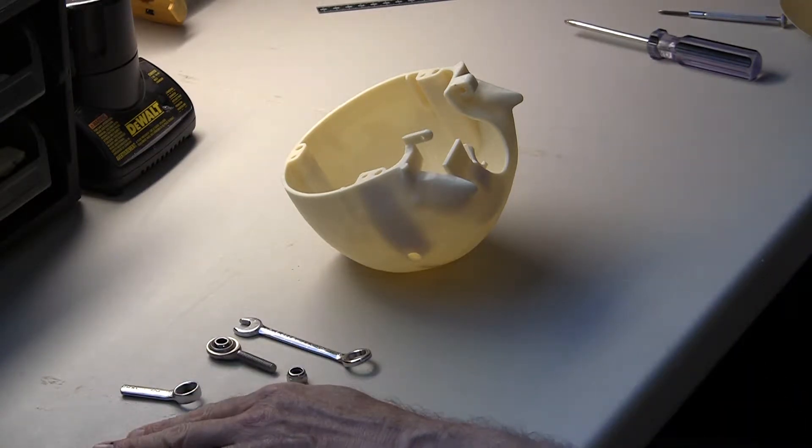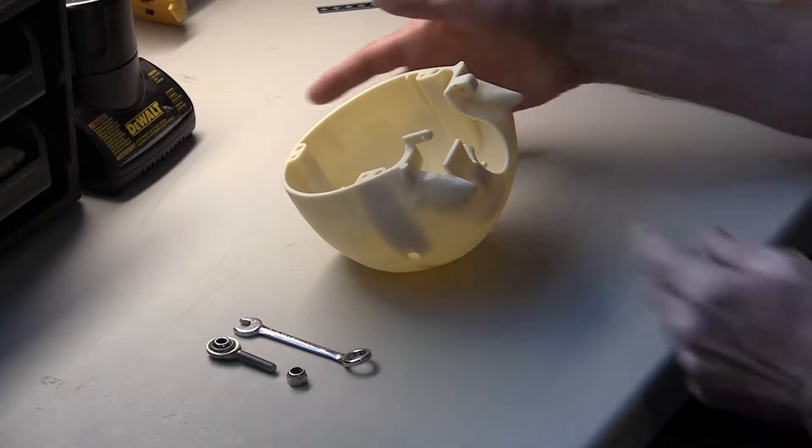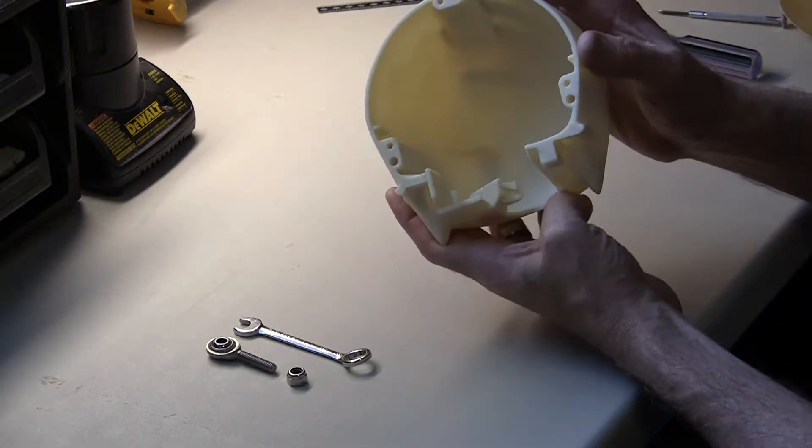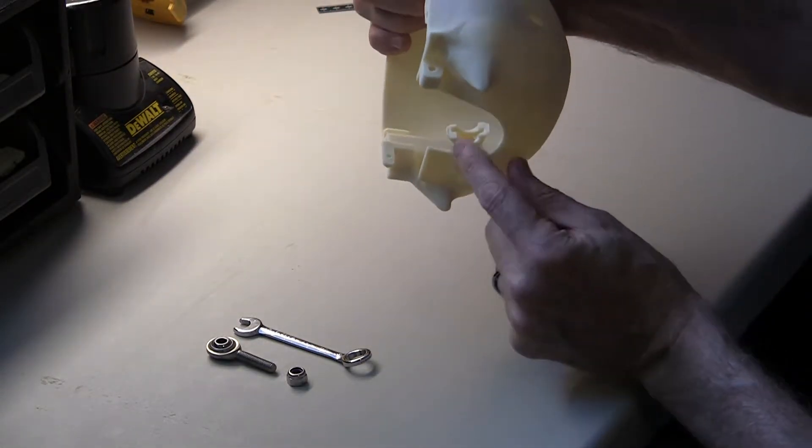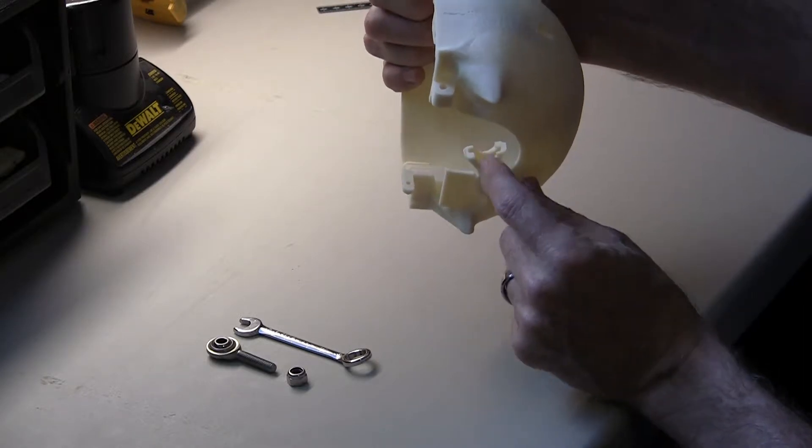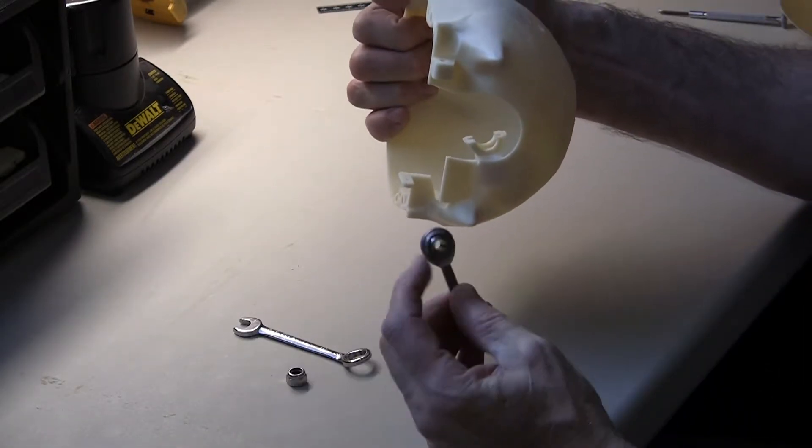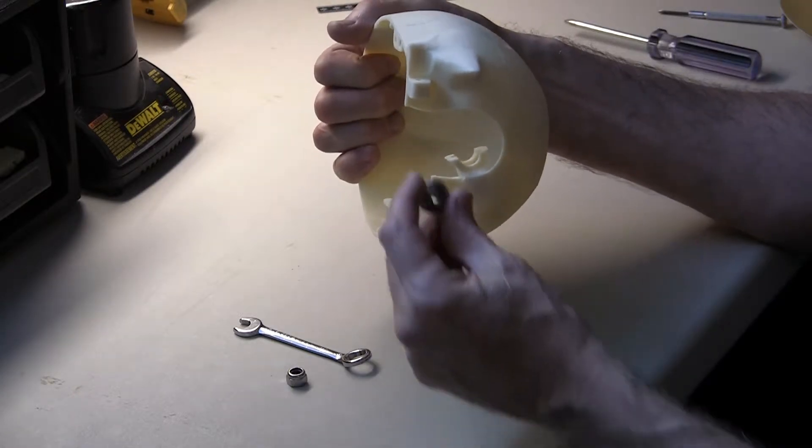Now let's get into the production part here. We're going to take the back of the skull, and if you look at it, you'll see this section right here that looks about the right size and shape to hold the rod end in, and place it in the center of the skull.